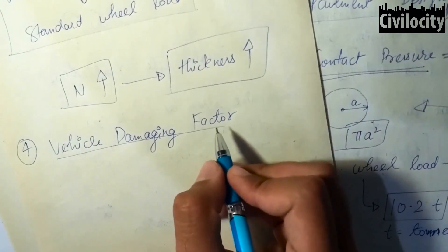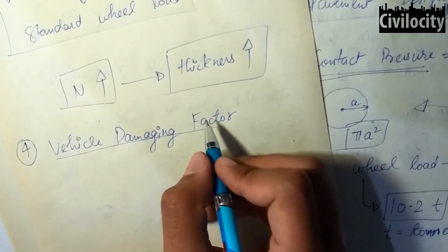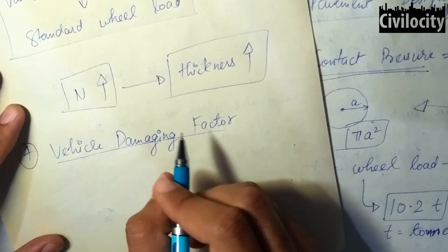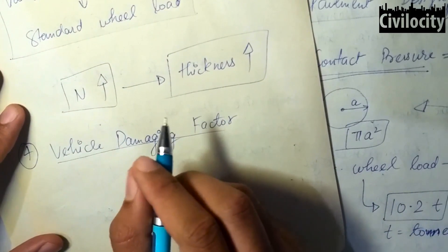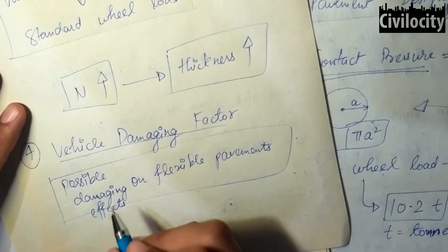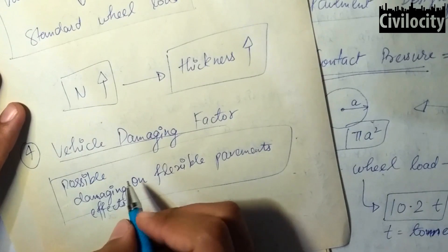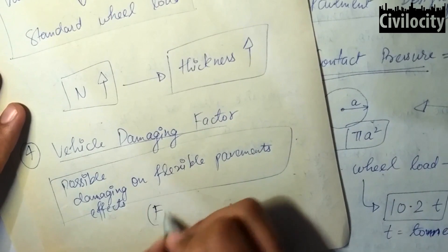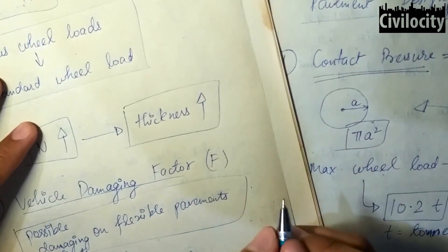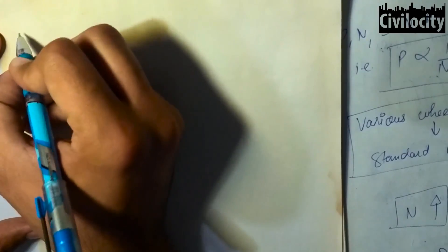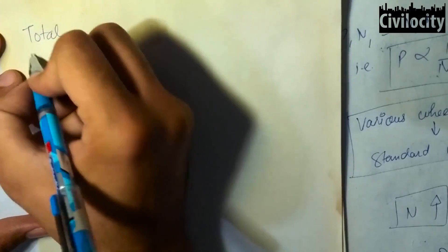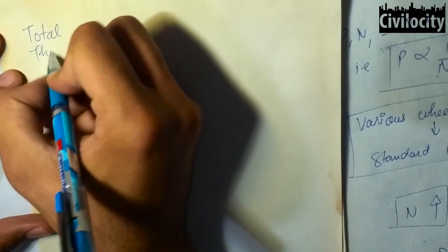Our fourth topic is the vehicle damaging factor, denoted by F. It indicates the possible damaging effects of a wheel or axle load on a flexible pavement structure with respect to the standard wheel or axle load.